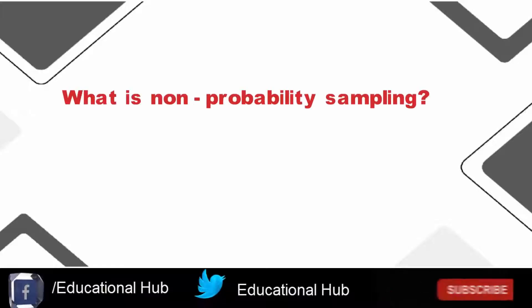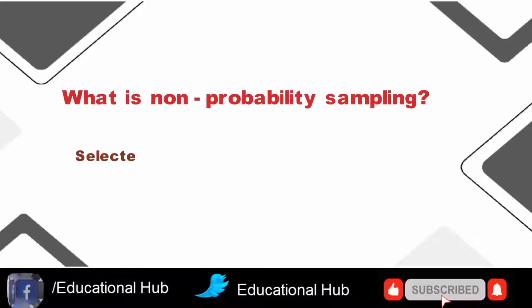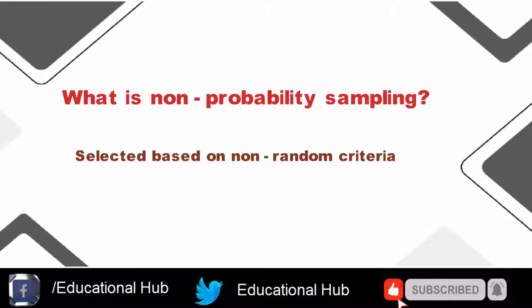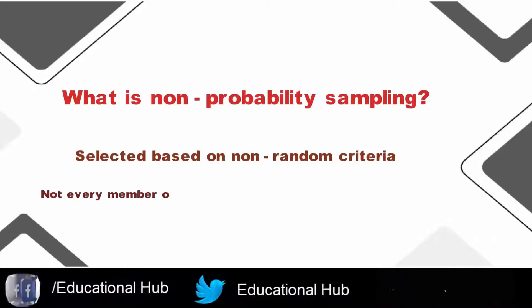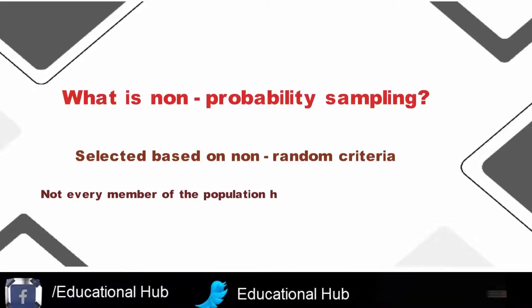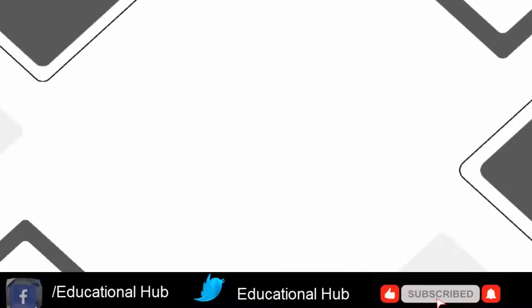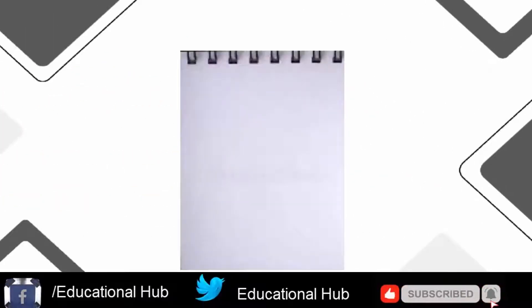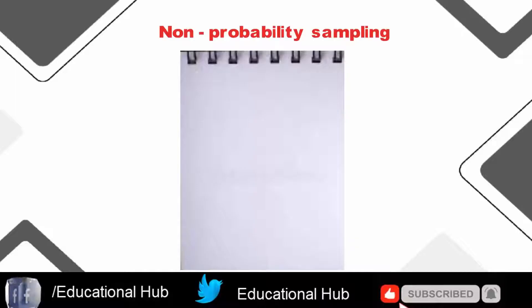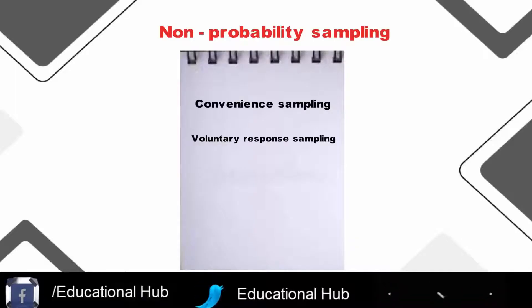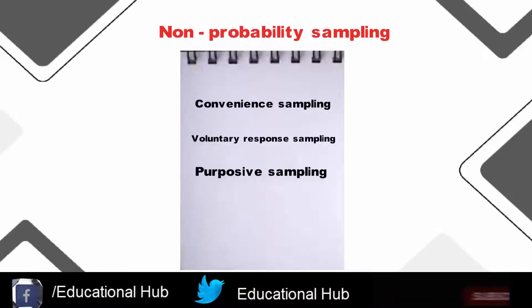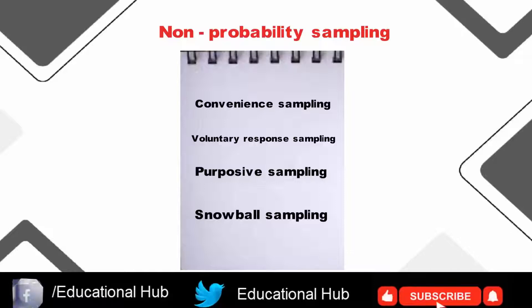What is non-probability sampling? In non-probability sampling, the sample is selected based on non-random criteria, and not every member of the population has a chance of being included. Common non-probability sampling methods include convenience sampling, voluntary response sampling, purposive sampling, snowball sampling, and quota sampling.